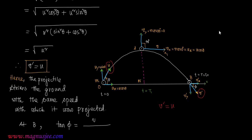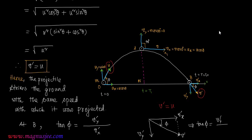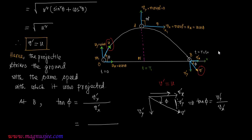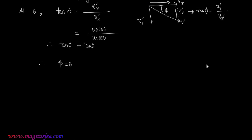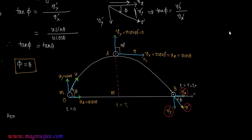At point B, tan phi = Vy prime divided by Vx prime. Drawing the diagram with V prime as the diagonal of a rectangle, V prime makes angle phi with the horizontal direction. Substituting the expressions, we get tan phi = U sin theta / U cos theta. Therefore, tan phi = tan theta, and hence phi = theta.